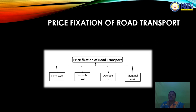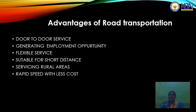The price fixation of road transport — covering fixed cost, variable cost, average cost, and marginal cost — is important across different countries and states. Road transportation is a very important transport in India, being the second key transport system in society.